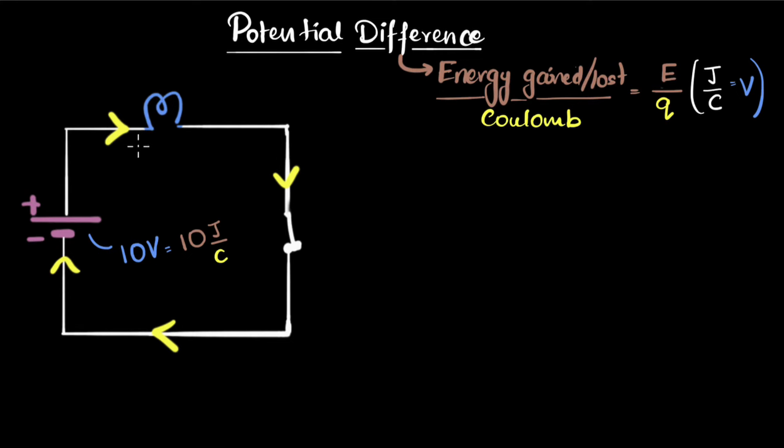And so even here, across these two points, we will say that there is a potential difference of 10 volt, because the same thing is happening here. It is gaining 10 joules. Every coulomb is gaining 10 joules. And as it goes from here to here, it is losing 10 joules. Does that make sense?